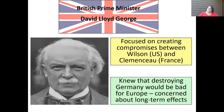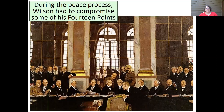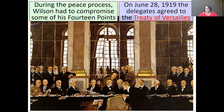The British Prime Minister was kind of a halfway point between Wilson and Clemenceau. He realized that if you destroy Germany and crush their spirit, it would eventually be bad for Europe — he was very concerned about long-term effects, and he had reason to be, as we'll see later. During this peace process, Wilson did have to compromise some of his 14 Points — he's not going to get everything he wanted. The treaty was agreed on in late June of 1919.